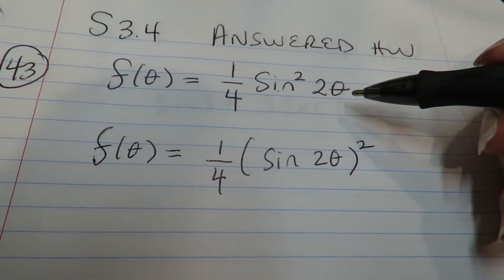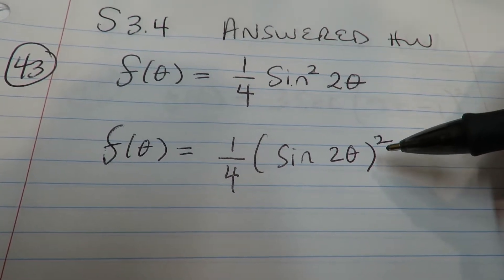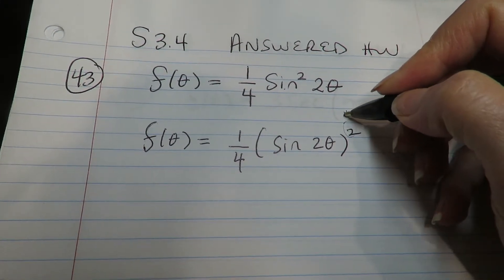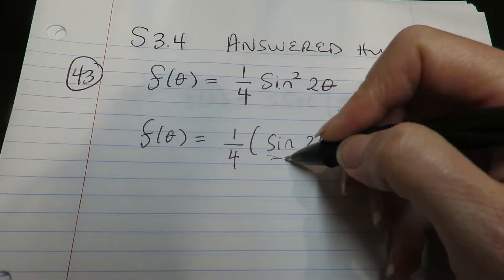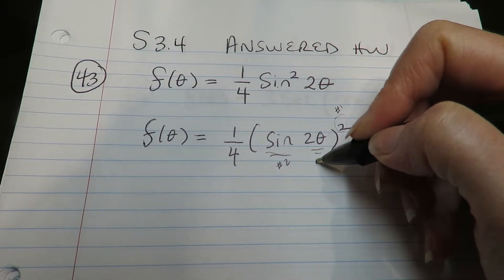All right, so again, since I only have one variable, there's no product, there's no quotient, this is strictly chain. This has three layers. This is the outermost layer. This is the middle layer. And this is the innermost layer.